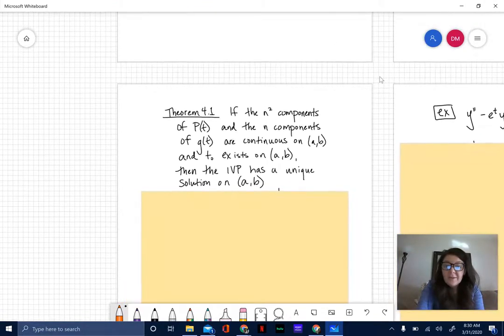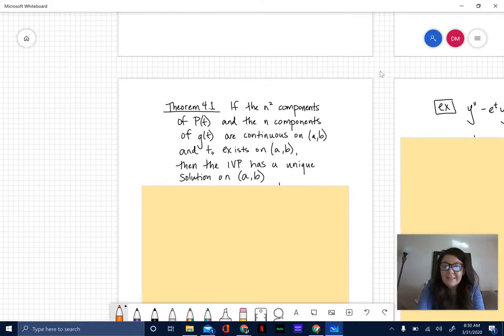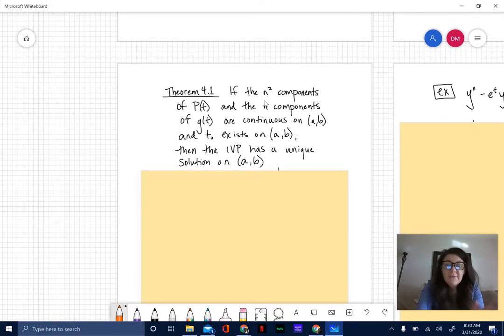Theorem 4.1 is our existence and uniqueness theorem. It says if the n squared components of P(t) and the n components of g(t) are all continuous on the interval (a,b) and our t sub zero exists on (a,b), then our initial value problem does have a unique solution. We're looking for continuity on the interval from a to b for both P and g, and also that our initial value t sub zero exists in that interval.